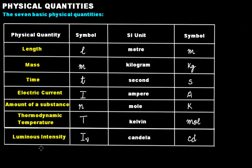When we measure these physical quantities, they have their SI units already established: length is in meter, mass is kilogram, time is second, electric current is ampere, amount of a substance is mole, thermodynamic temperature is Kelvin, and luminous intensity is candela.